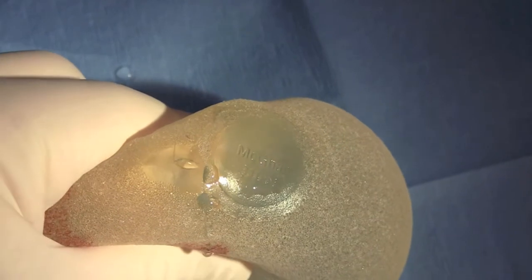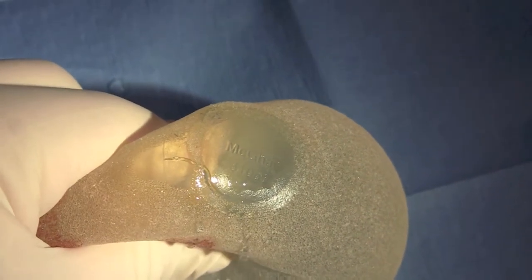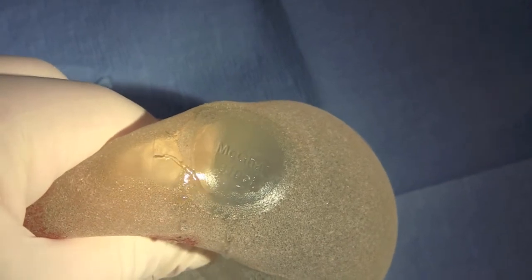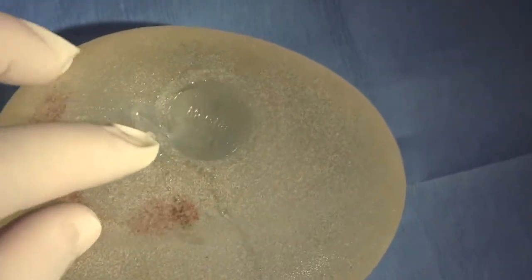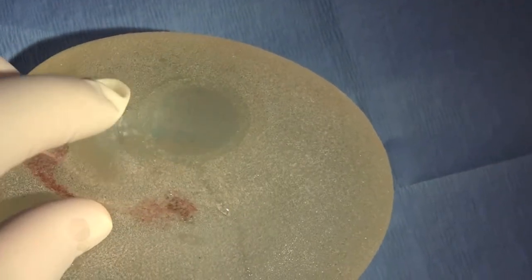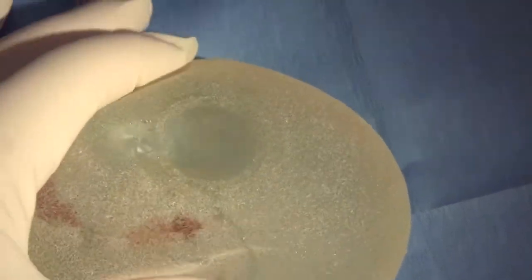The way implants are made is there's a mold and the mold is dipped in liquid silicone. Then the silicone is removed from the mold and a patch is placed. It's just at the rim of the patch where it meets the regular part of the implant that this leakage is occurring.